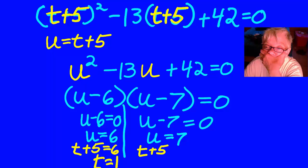I subtracted 5 from both sides. t plus 5 equals 7, so t equals 2. Your solutions are t equals 1 and t equals 2.